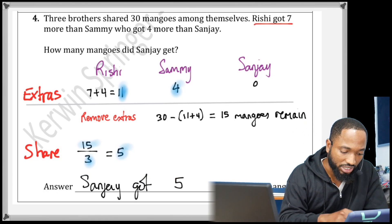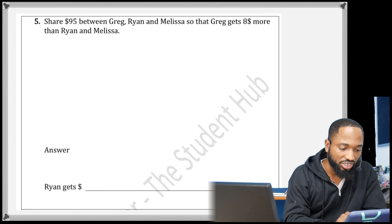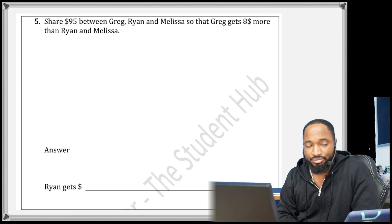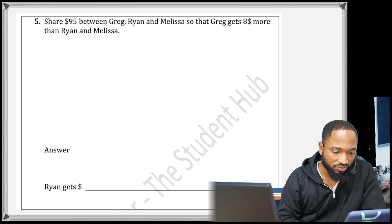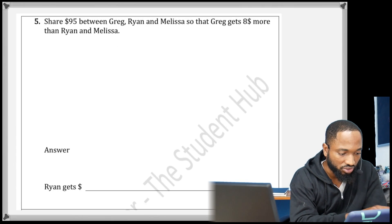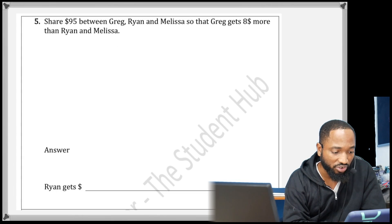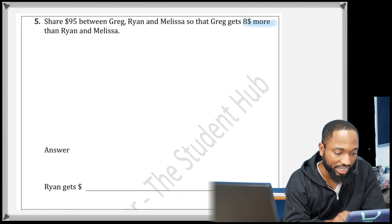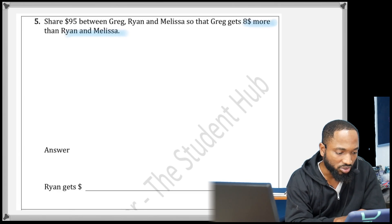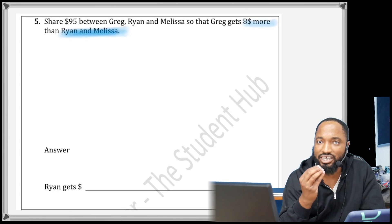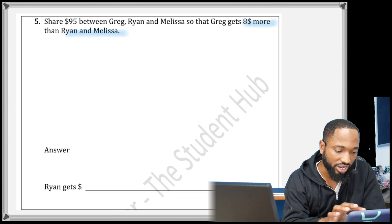So Sanjay got 5, that's the answer there. Here's the next question. You can take a little read of this question. I'm leaving some questions for you to do. You can try this question: share $95 between Greg, Ryan, and Melissa so that Greg gets $8 more than Ryan and Melissa. So this question is assuming that Ryan and Melissa get the same amount. You can try that one.